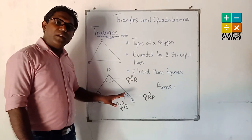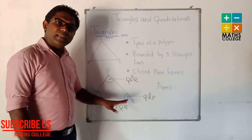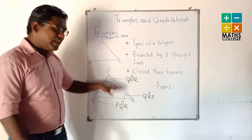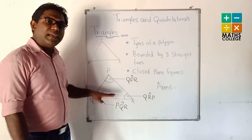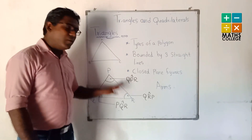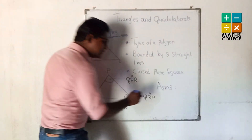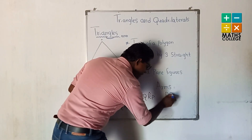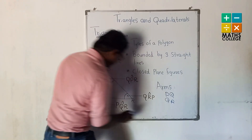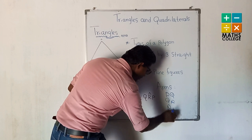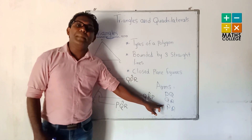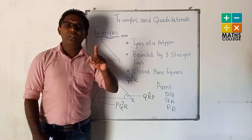Another type of element is sides. How many sides does a triangle have? Three sides: PQ, QR, and PR. We can write the sides as PQ, QR, and PR.